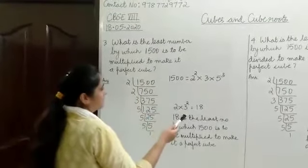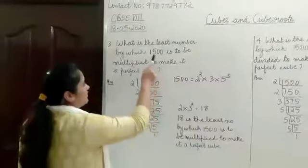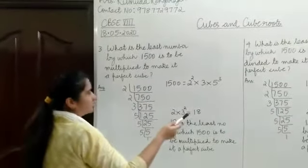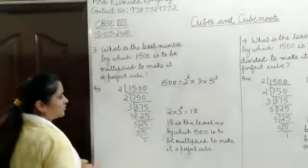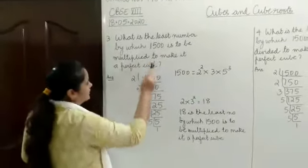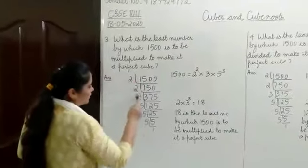What is the smallest number by which 1500 is to be multiplied so that the product is a perfect cube? That's the question. To answer this, we need to first resolve the given number 1500 into its prime factors.